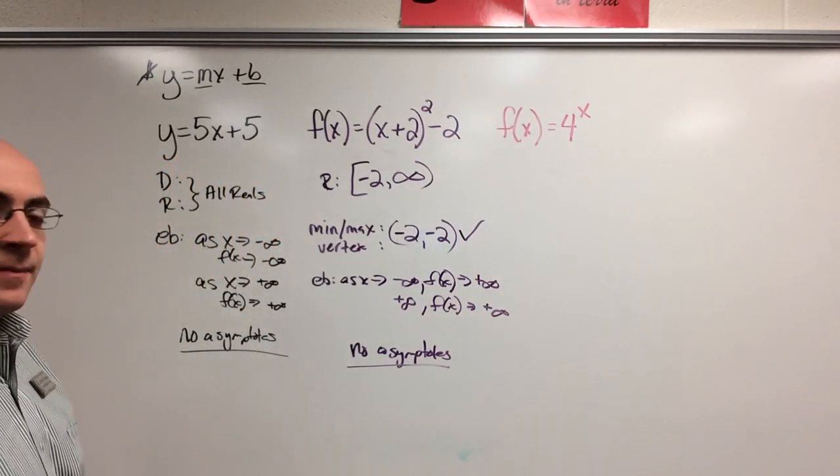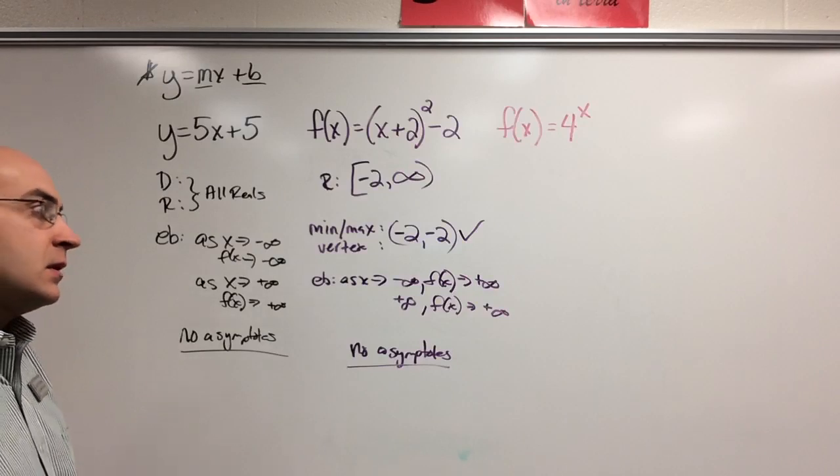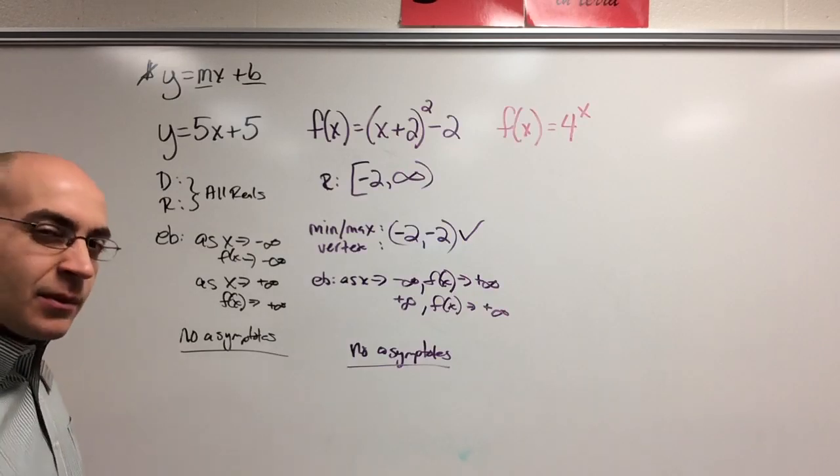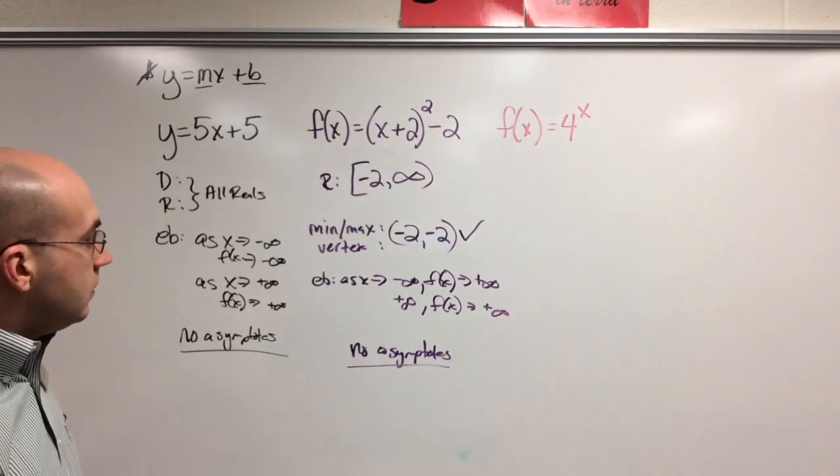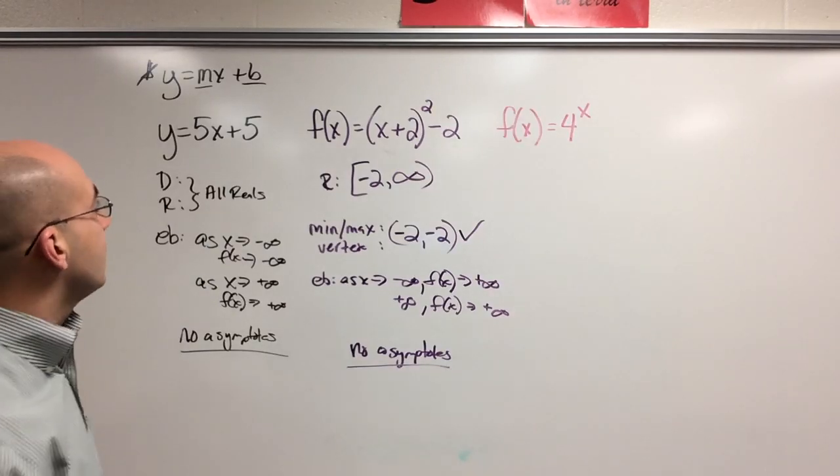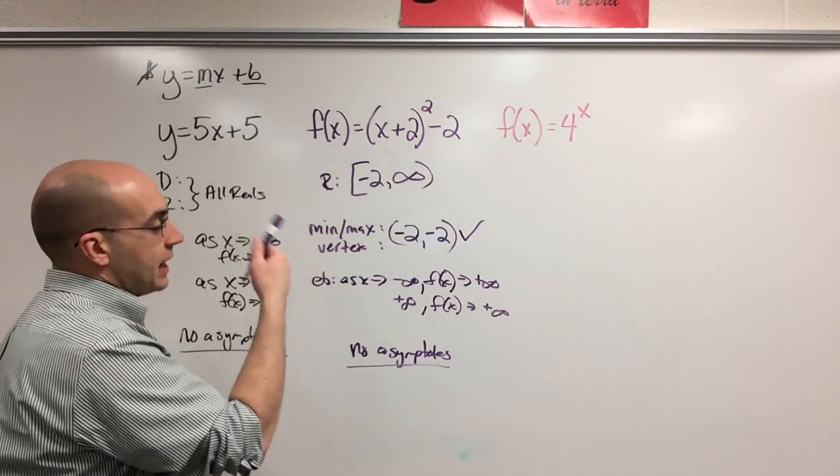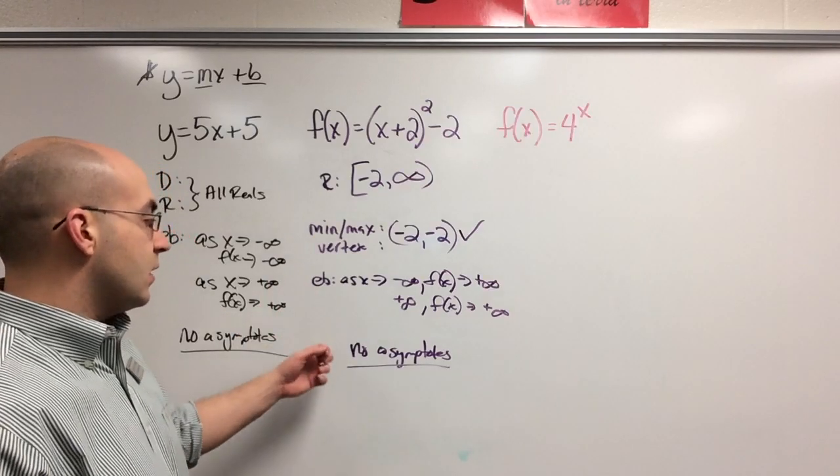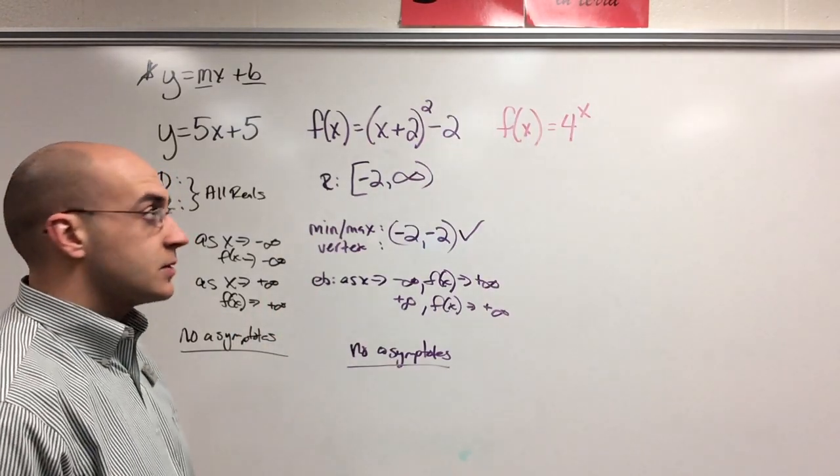Min, max. Increase, decrease. I think we've done a good job with increase, decrease, so I'm going to hold off on that for now. But remember the vertex, remember the range, domain, and the end behavior, and make sure you understand they have no asymptotes, because that's also really big.